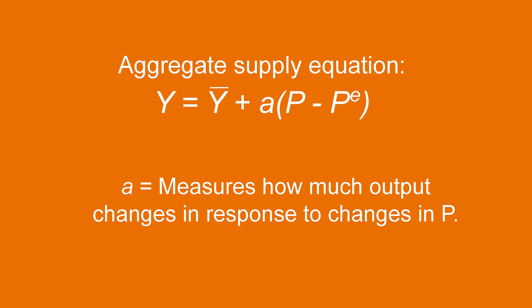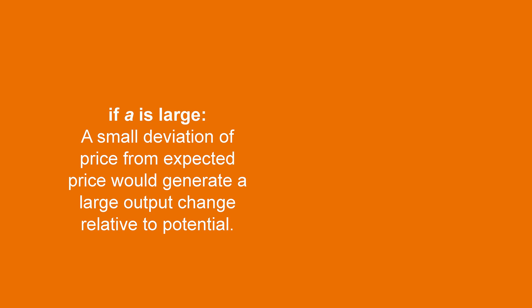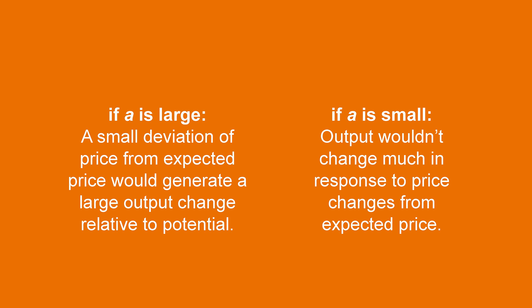The constant A, which we assume is positive, measures how much output would deviate from potential if actual prices deviates from expected price. If A is a large number, a small deviation of price from expected price would generate large output changes, relative to potential. If A is small, then output wouldn't change much in response to price changes from the expected price.